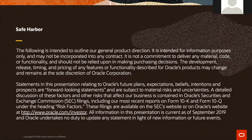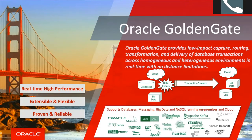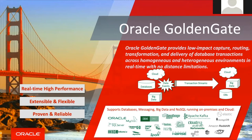Before going into High Availability and Disaster Recovery, let me give a high-level overview of what Golden Gate is. Golden Gate provides low-impact capture, routing, transformation, and delivery of database transactions across homogeneous and heterogeneous environments in real or near real time. There is no limitation for the distance — you can take it to the cloud, on-prem, or from cloud to cloud.